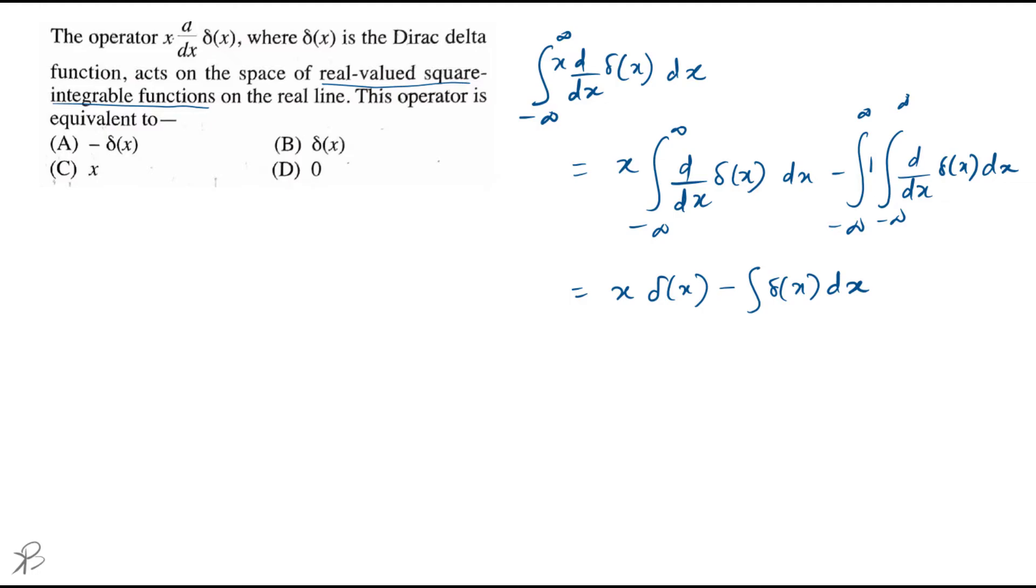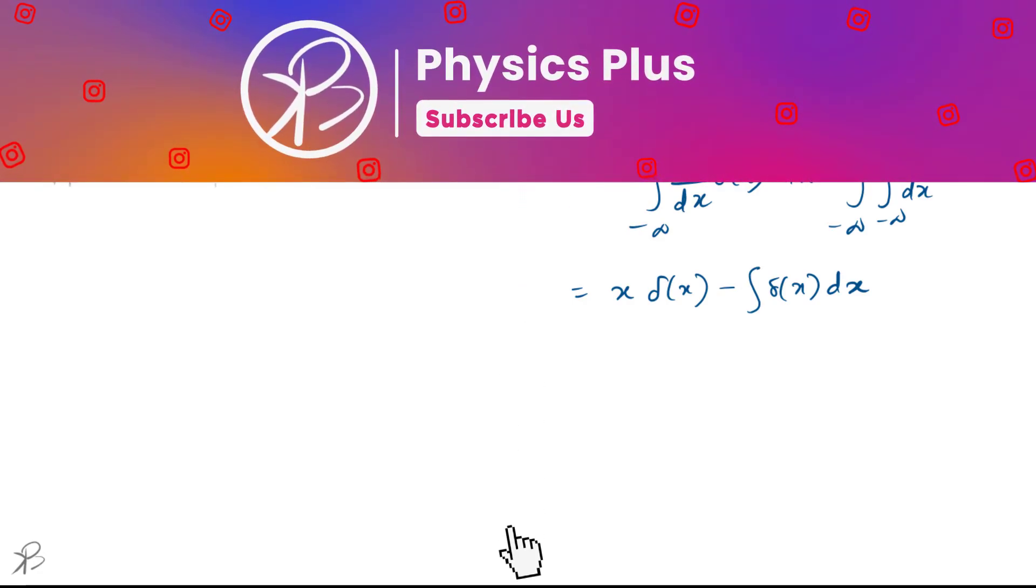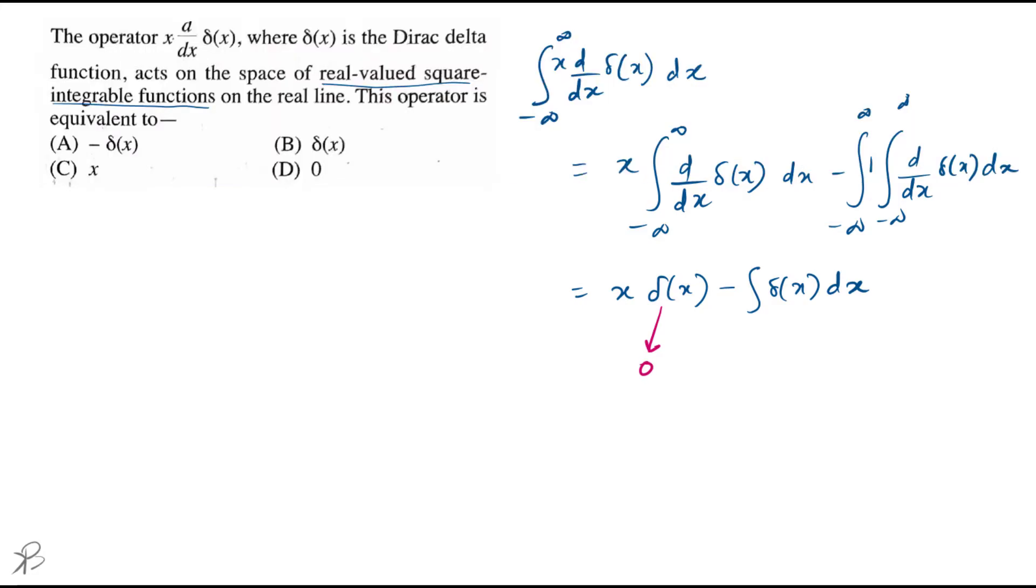So finally, what we get is if we take the limit, this term goes to zero because minus infinity to plus infinity. Then the expression becomes: the integral from minus infinity to plus infinity x d/dx δ(x) dx is equal to minus the integration of δ(x) dx.